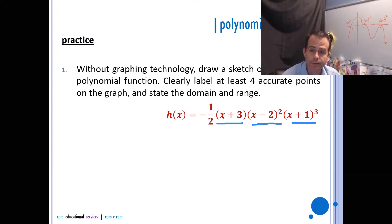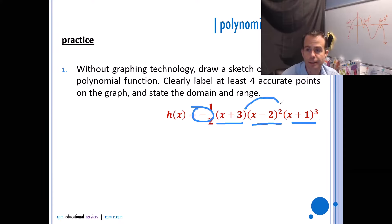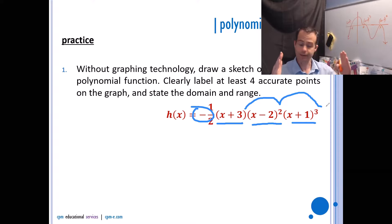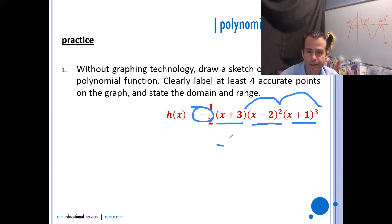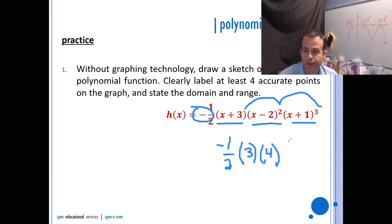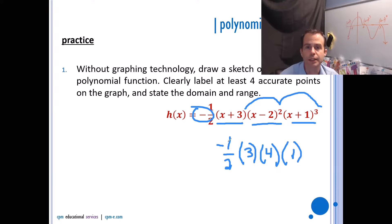The leading coefficient is negative, so this graph is going to end down. It's a degree six because I'm adding the multiplicities together. Even degree opening down means both ends come down on the left and on the right. To get the y-intercept, I plug zero in for x, making sure to account for the squares and cubes. Plugging in zero: negative one half times three times four (that's negative two squared) times one (one cubed) gives three times four times one equals twelve, times negative one half equals negative six.